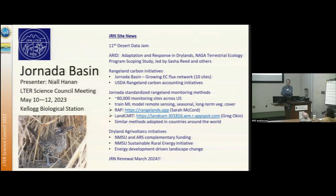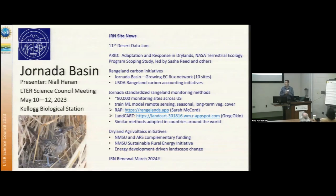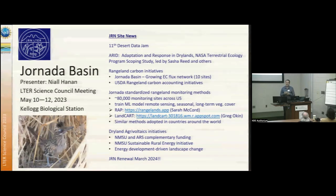Near the top there, we just got news that a new NASA scoping study will be funded. That's a one and a half year effort to gather the community to plan a NASA program for dryland remote sensing. If it gets funded, it would be like another ABOVE program or an LBA kind of $100 million level activity out of NASA.